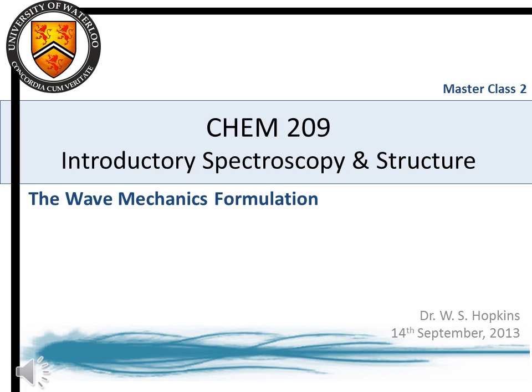Welcome to the Chemistry 209 Masterclass series. This series of lectures is intended to highlight the key concepts of introductory spectroscopy and structure. This lecture, Masterclass 2, discusses how we formulate quantum theory and how this formulation may be interpreted in terms of quantized energy levels and atomic and molecular orbitals.